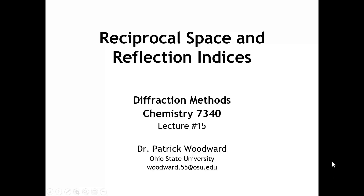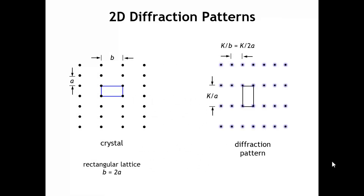In the previous lecture, we looked at the diffraction patterns of some two-dimensional crystals, and we also learned about Laue's equations, which govern the angles that give constructive interference in three-dimensional crystals. We saw that a two-dimensional rectangular lattice produced a rectangular diffraction pattern, with an inverse relationship between the spacing of the peaks in the diffraction pattern and the spacing of the atoms in real space. In this lecture, we're going to see how we can generate a reciprocal lattice given any real space lattice, and then we'll finish by seeing how that is mathematically related to the conditions specified by Laue's equations.